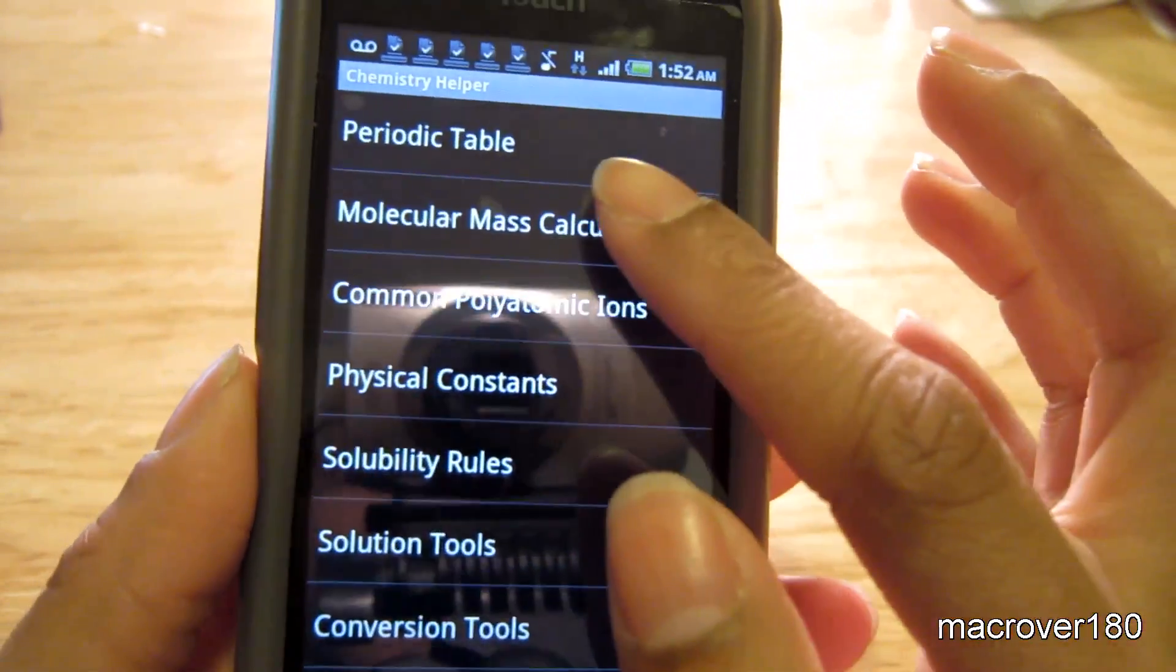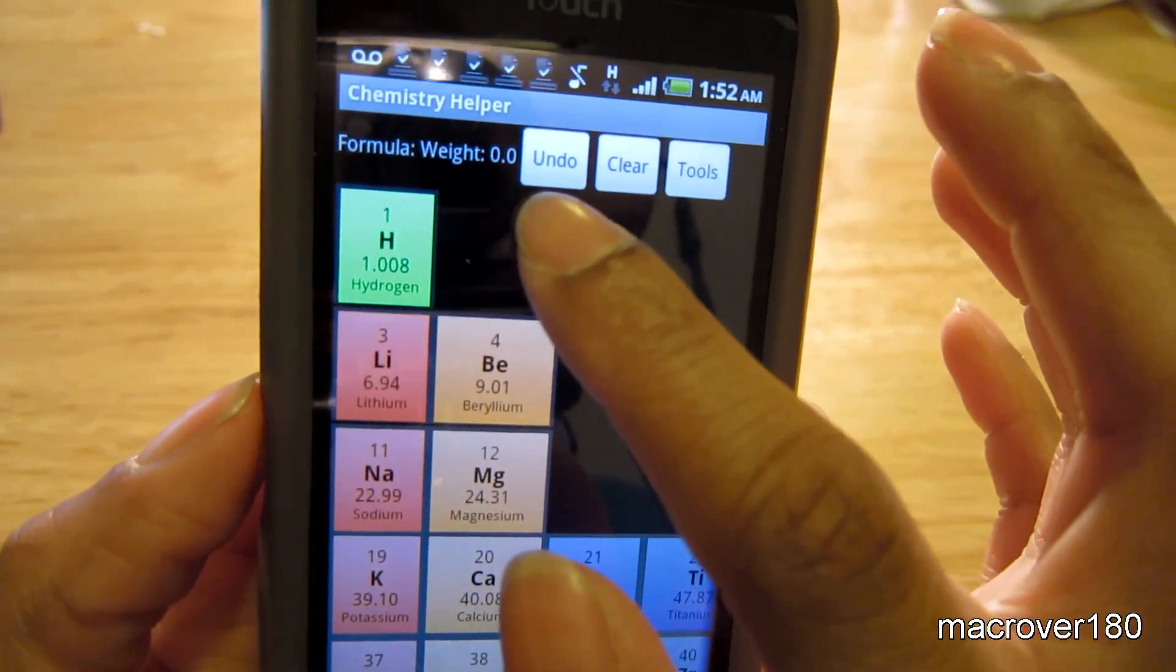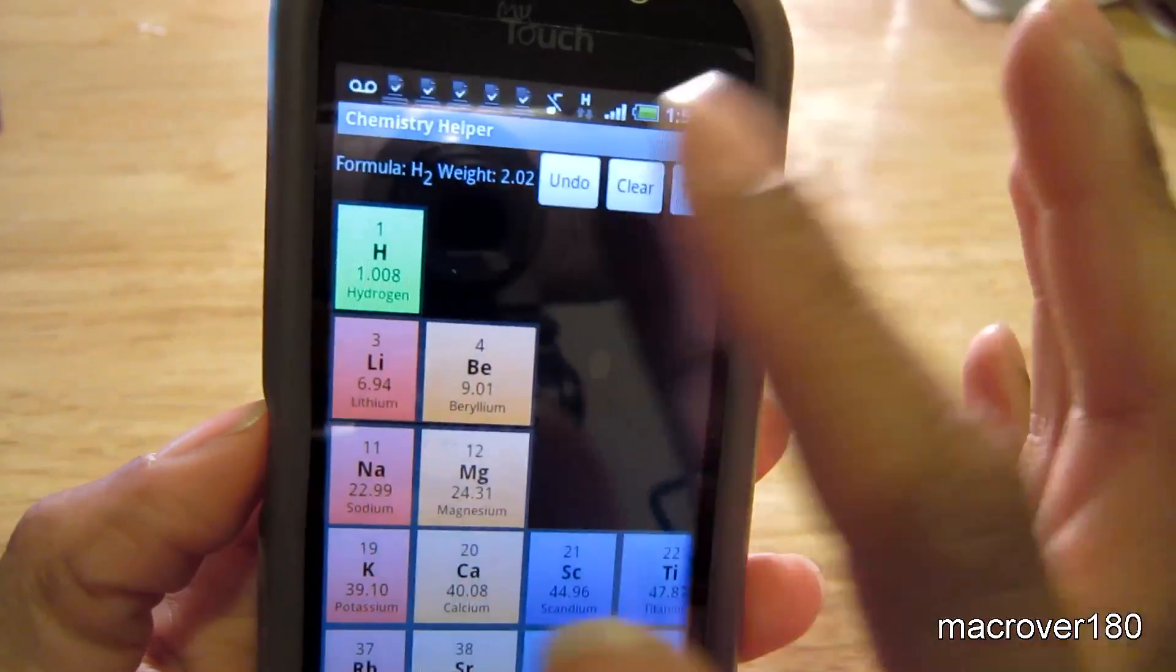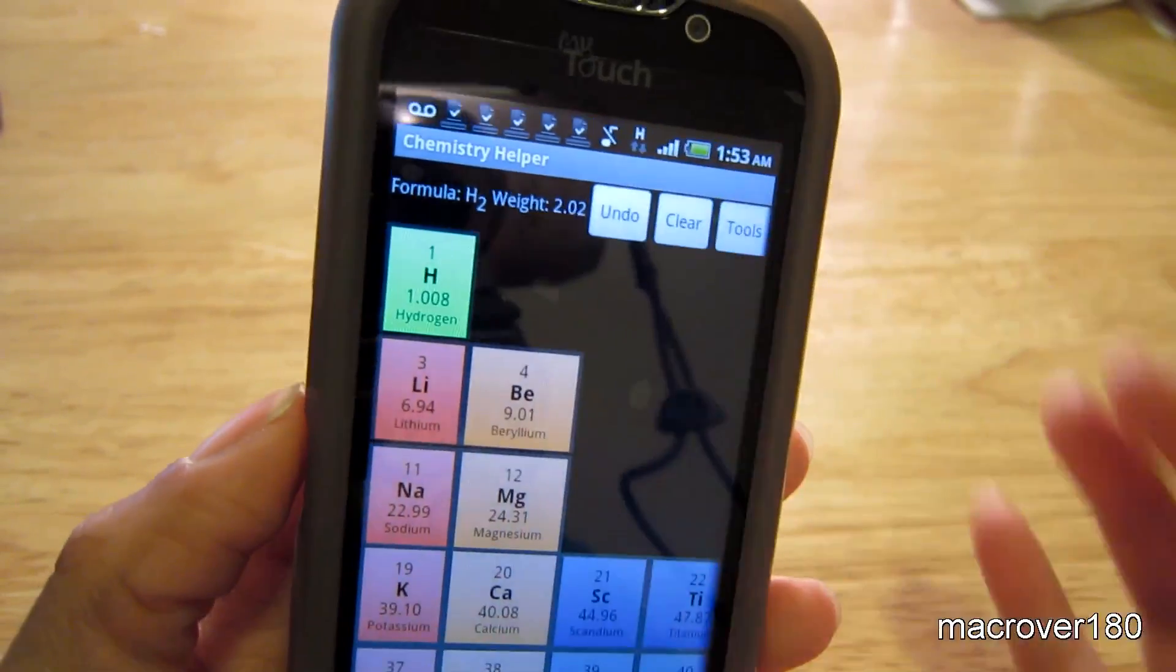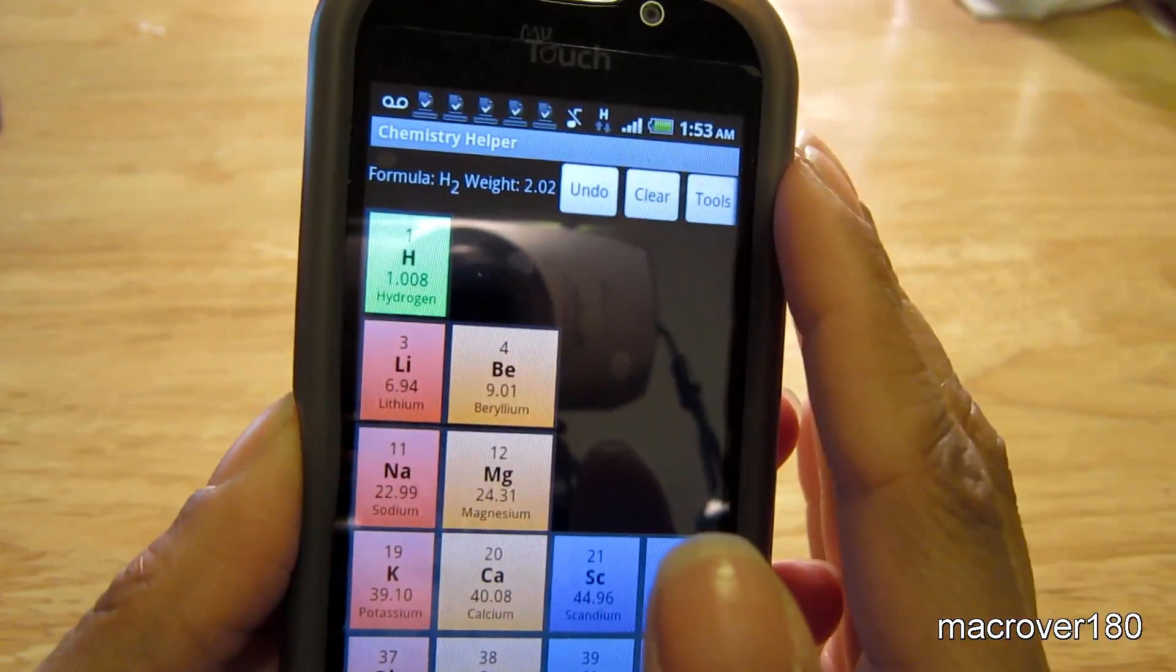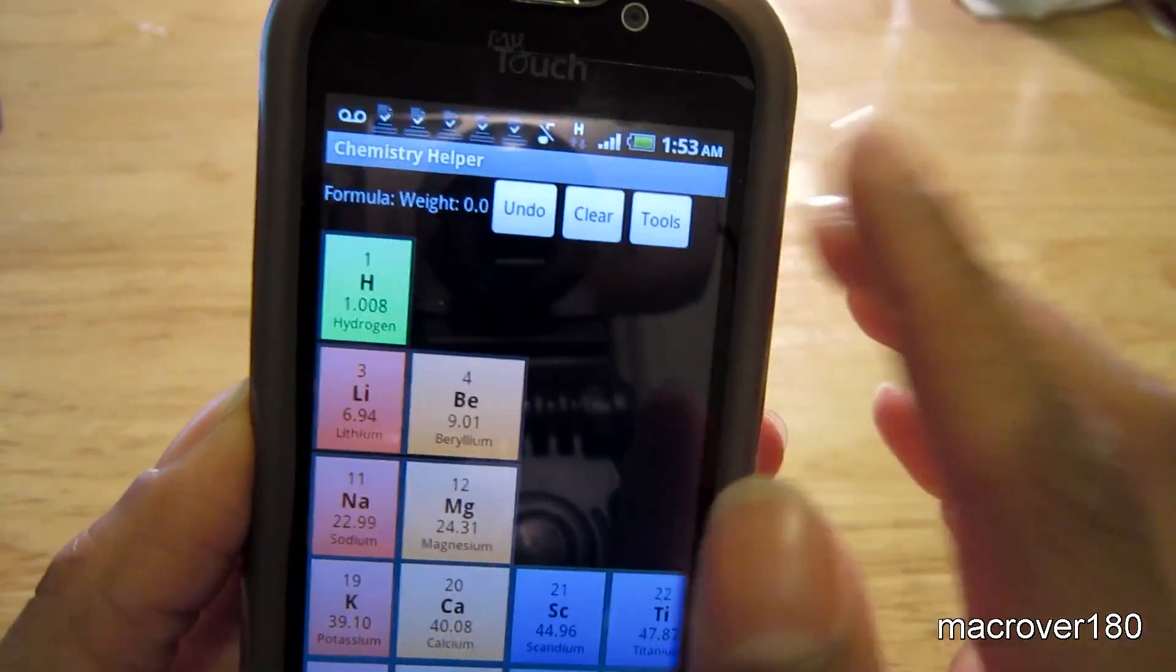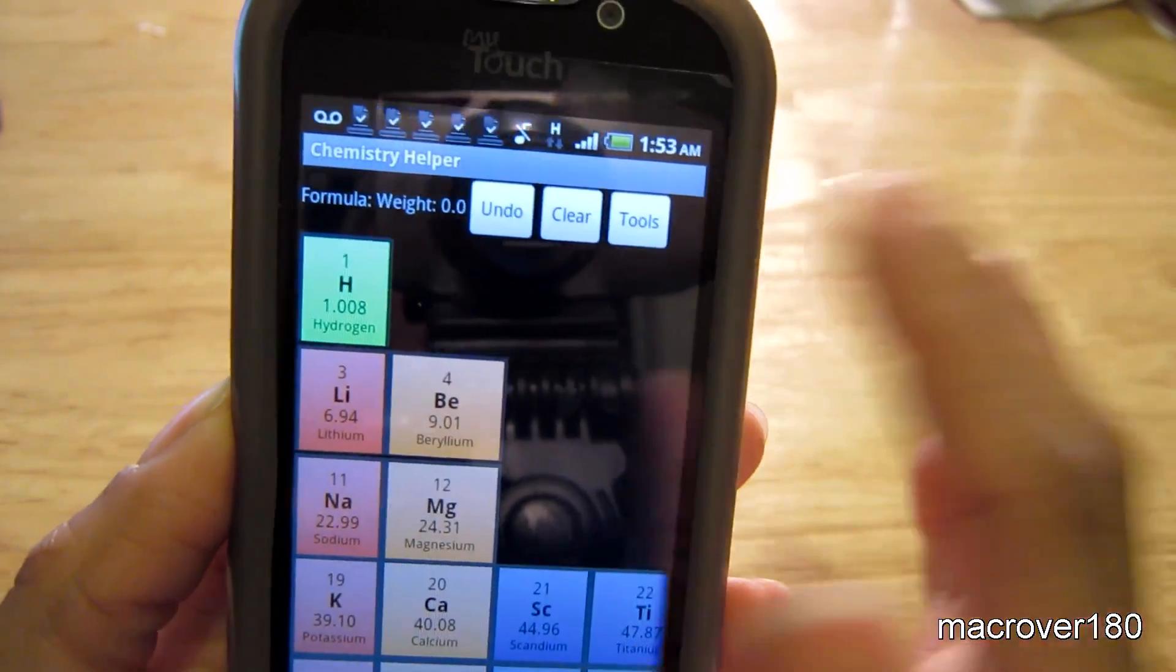You can calculate the molecular mass of a particular element. So undo allows you to undo, let's say you want to undo finding out the molecular mass of hydrogen and you've pressed it too often. You can undo it to go one step back, and you can keep going one step back until it's completely cleared, or you can just press clear to clear it out in one shot.